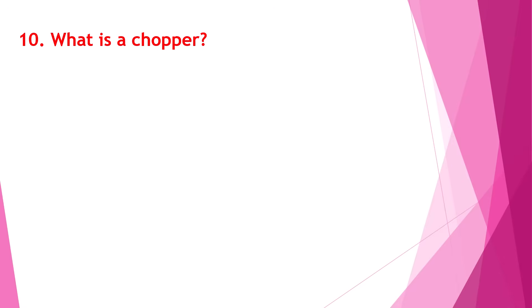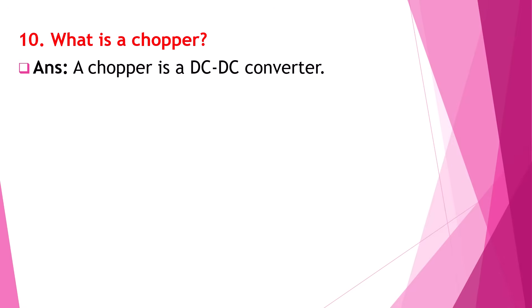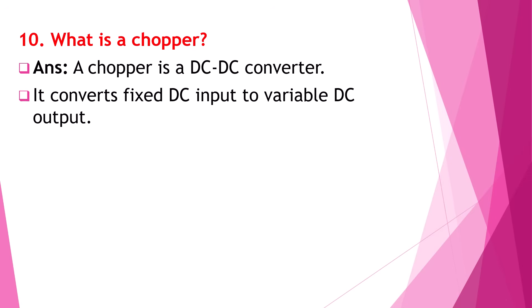What is a chopper? A chopper is a DC to DC converter. It converts fixed DC input to variable DC output.